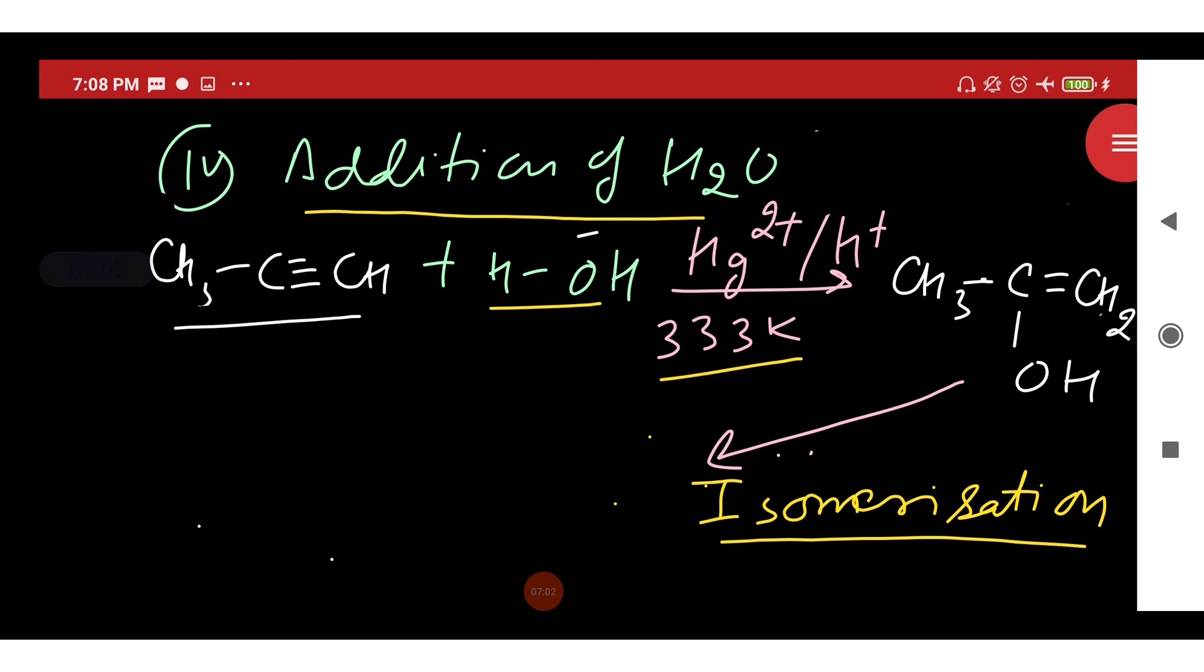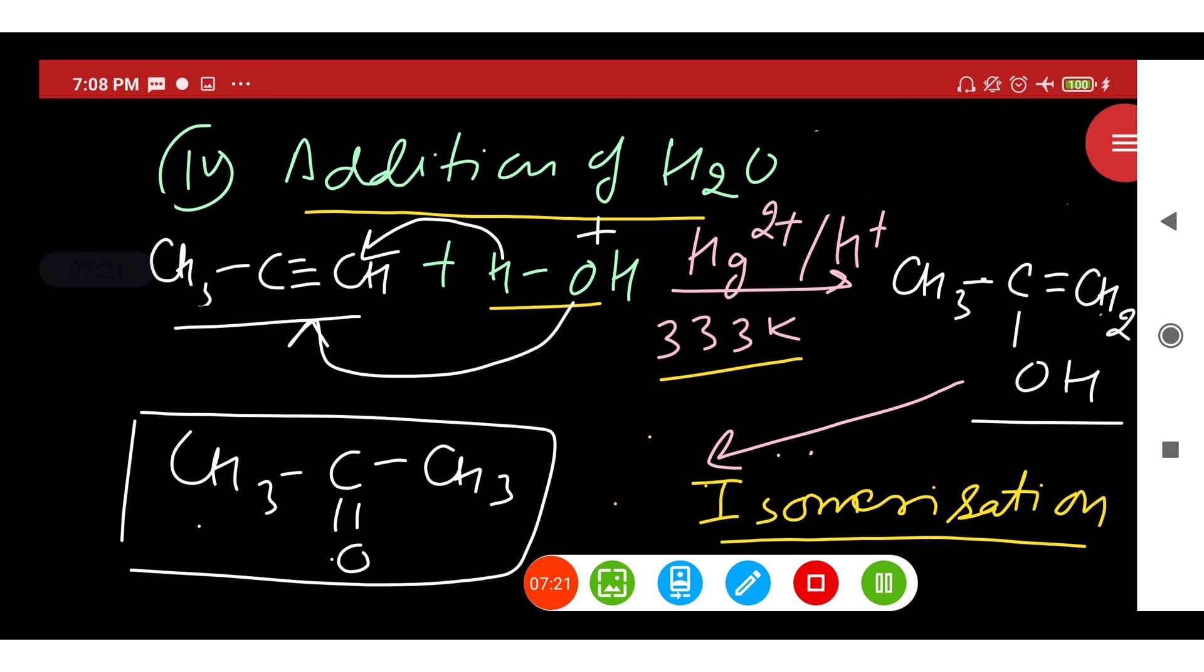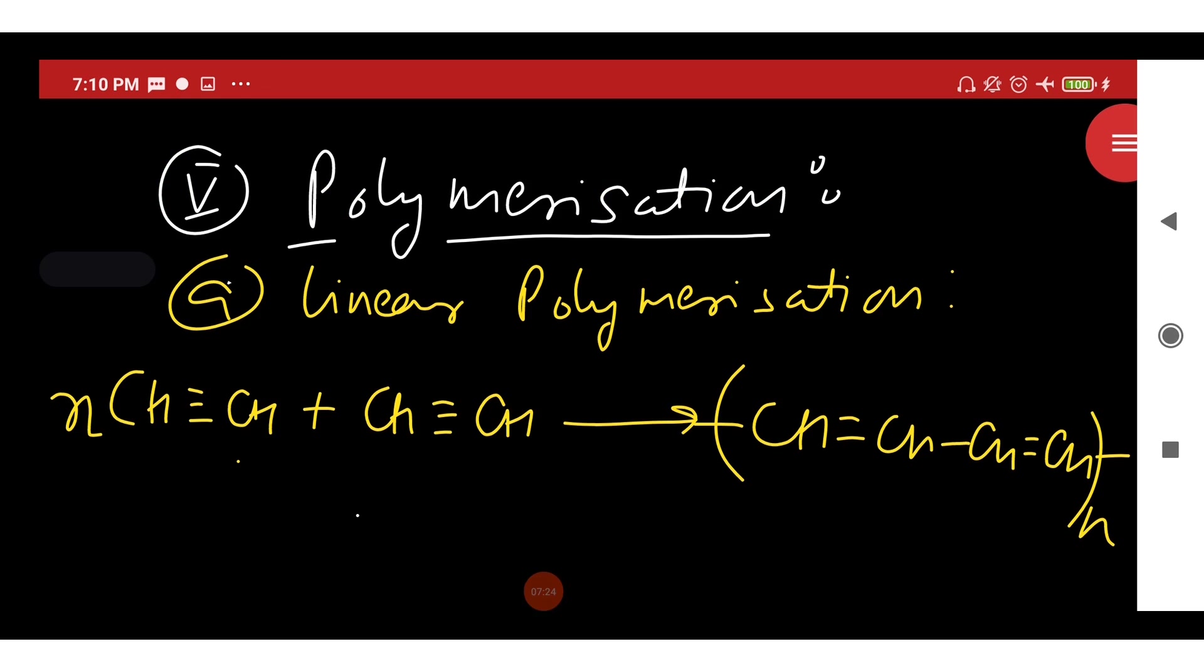If we carry out same reaction in the presence of propyne, then this intermediate is formed which on isomerization gives rise to carbonyl compound called propanone. Its common name is acetone. Next is polymerization. Alkynes undergo linear polymerization under suitable conditions to produce polyethyne or polyacetylene.